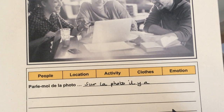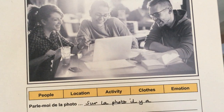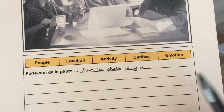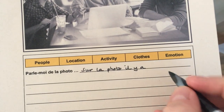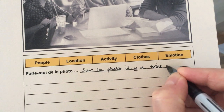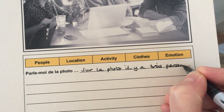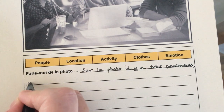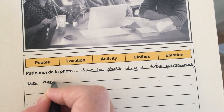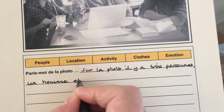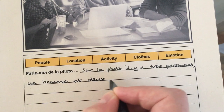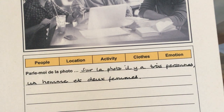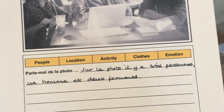Remember, 'il y a' means 'there is' or 'there are'. So I have got three people: two women and a man. So: 'Sur la photo, il y a trois personnes. Un homme et deux femmes.' On the photo there are three people, one man and two women.